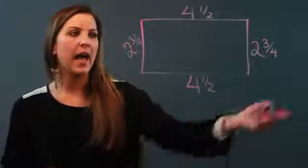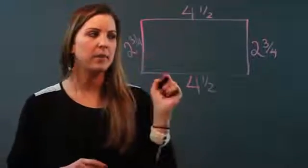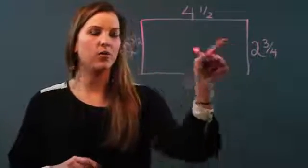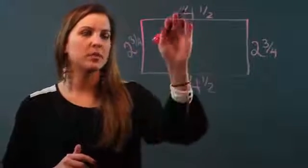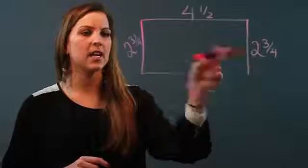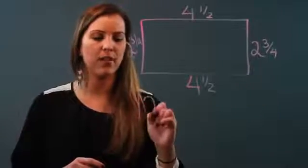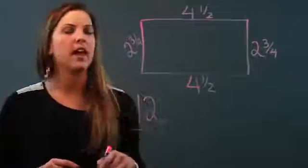So to find the perimeter, I have to add up all of these sides. I'm going to add their whole numbers first and then add the fractional parts. So I have 4 + 4 is 8 + 2 is 10 + 2 is 12. So I already have 12 and I'm going to leave that on the side and add it on later.